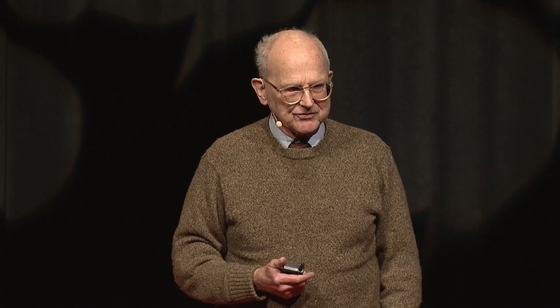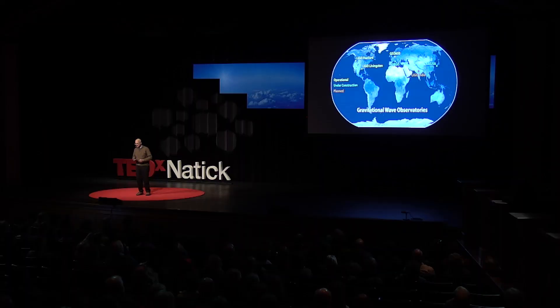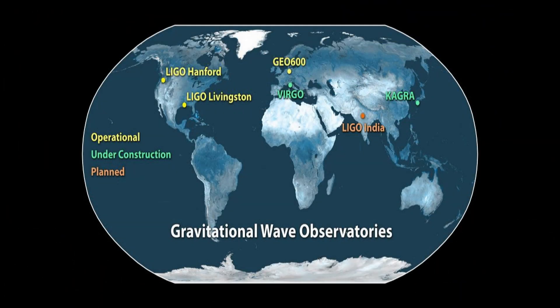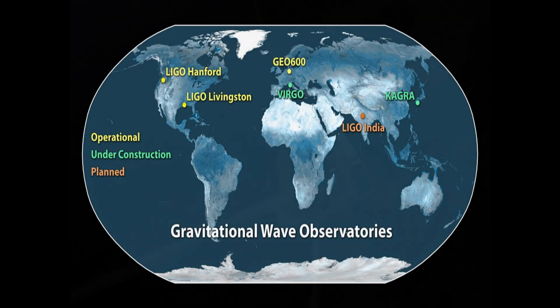These detectors were placed all over the world. The ones that made the first detection are in the United States: one in Hanford, Washington State, and another in Louisiana. There are others: Virgo in Italy, KAGRA almost ready to run in Japan, and one being built in India. That's a whole network, and you'll see why it's important to have one.